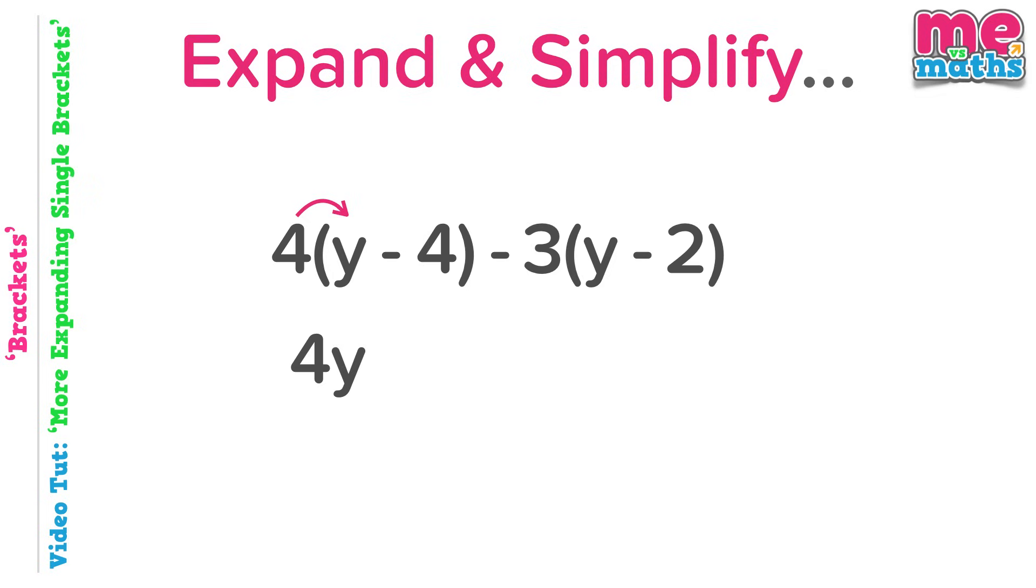Next, the four outside the bracket is positive but the four inside the bracket is negative as it has a minus sign in front of it. So positive four times negative four will give us negative sixteen.